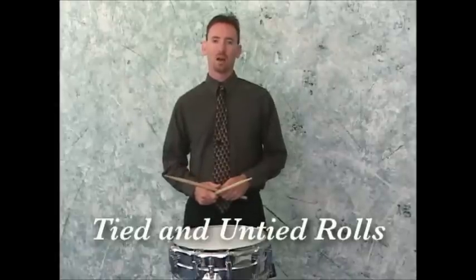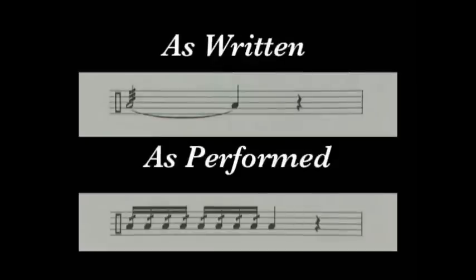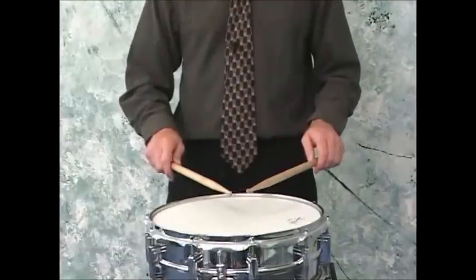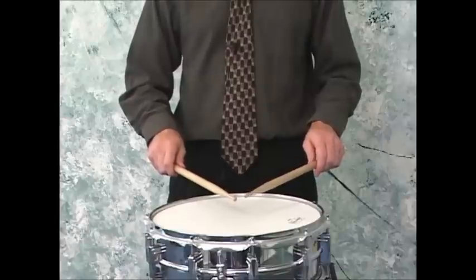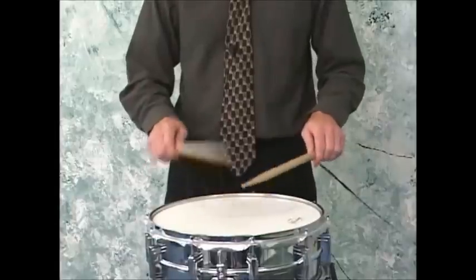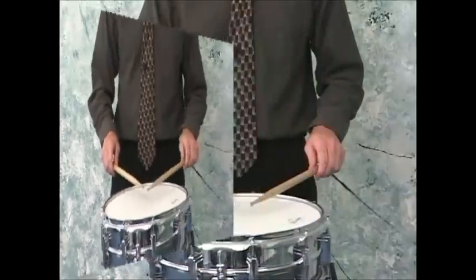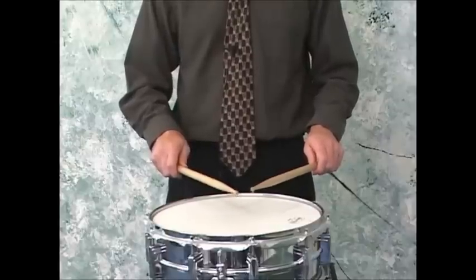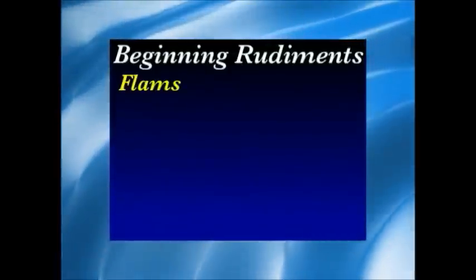Examples of tied and untied rolls. This is a half note roll tied to a quarter note — notice that there is no space between the buzz roll and the release. An example of a half note roll untied followed by a quarter note — notice the space between the buzz roll and the release note. This is also a half note roll.